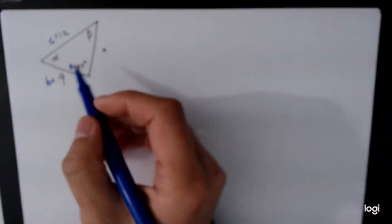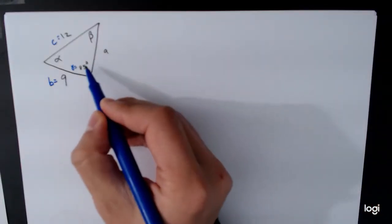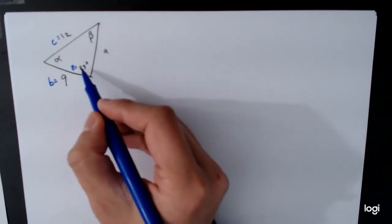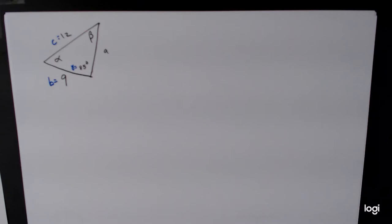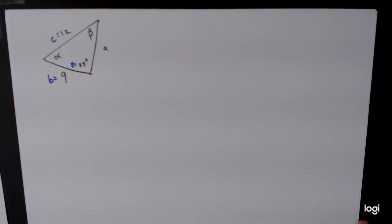So the first thing we can notice is that the given information, which is that side, that side, and this angle, so angle, side, side, this is an ambiguous case. So we will have to discover as we go whether or not there are going to be one or two triangles here.